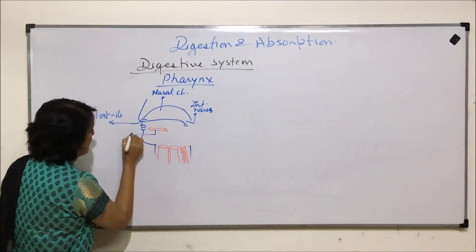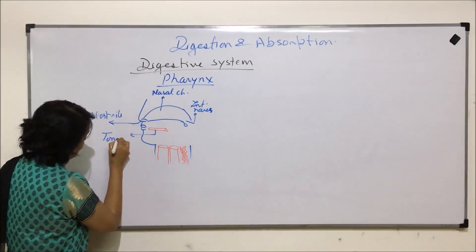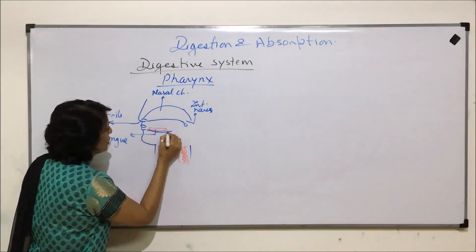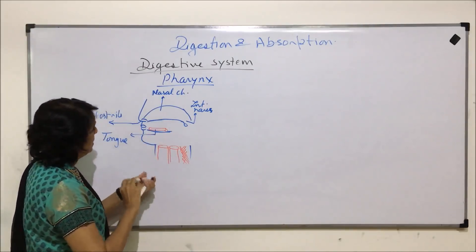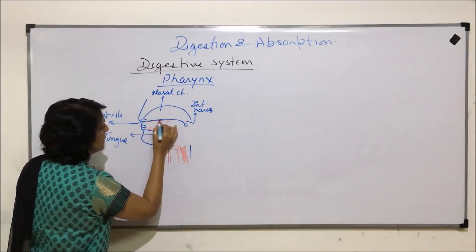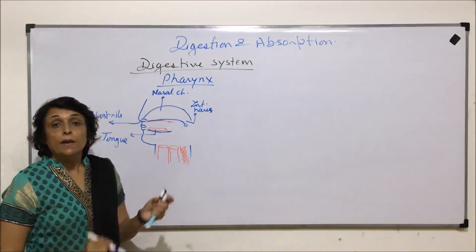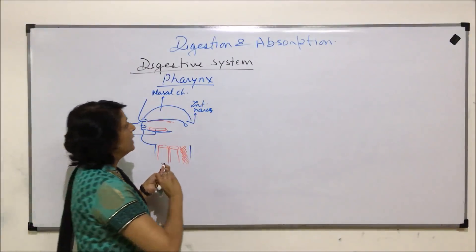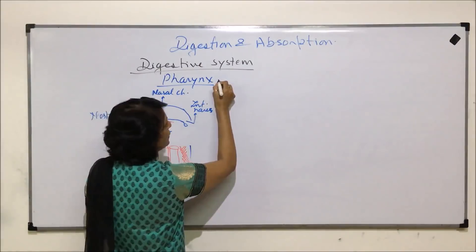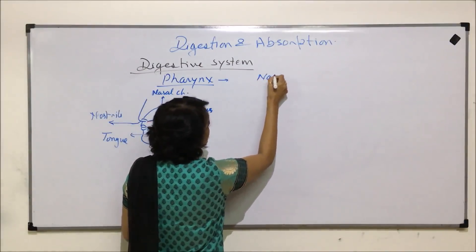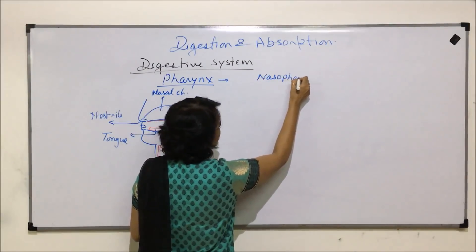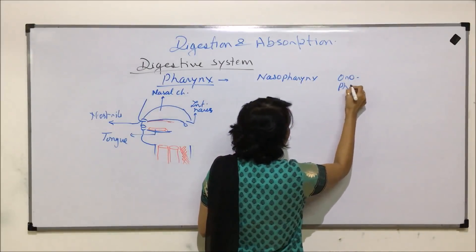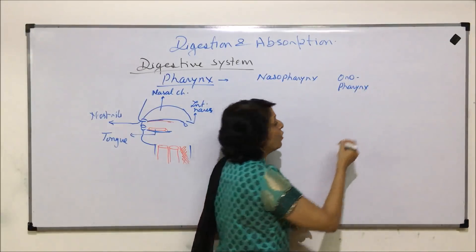This part is the tongue, and here is the lower jaw and the upper jaw. Now, the pharynx is divided into three parts: nasopharynx, oropharynx, and laryngopharynx.